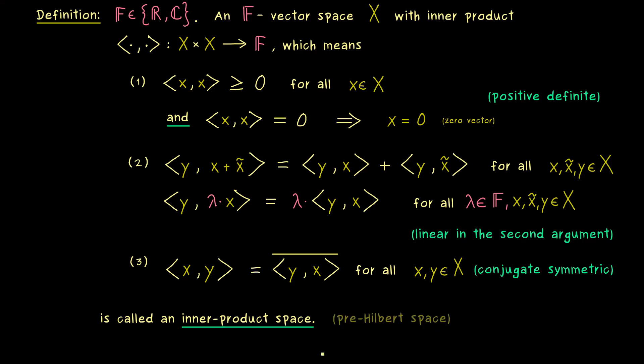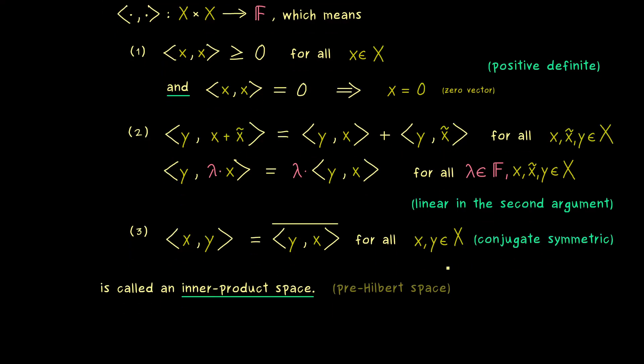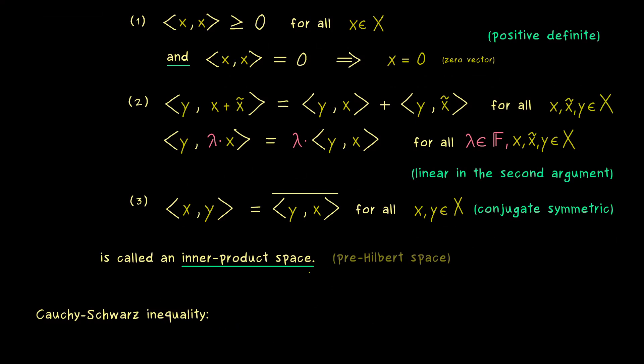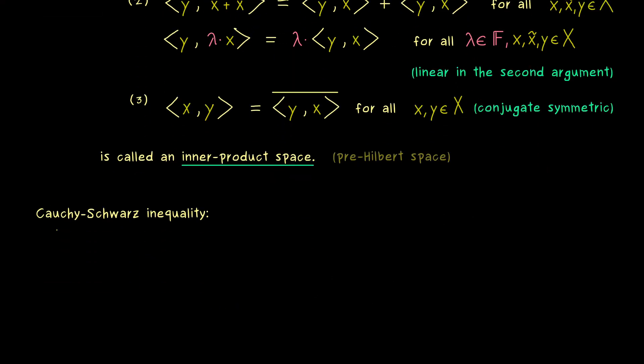Indeed, some people call this a pre-Hilbert space, because most of the stuff we need for a Hilbert space is already there. So a lot of properties we already have in a pre-Hilbert space. For example, the famous Cauchy-Schwarz inequality. This one is such an important property that we should definitely talk a little bit about it here.